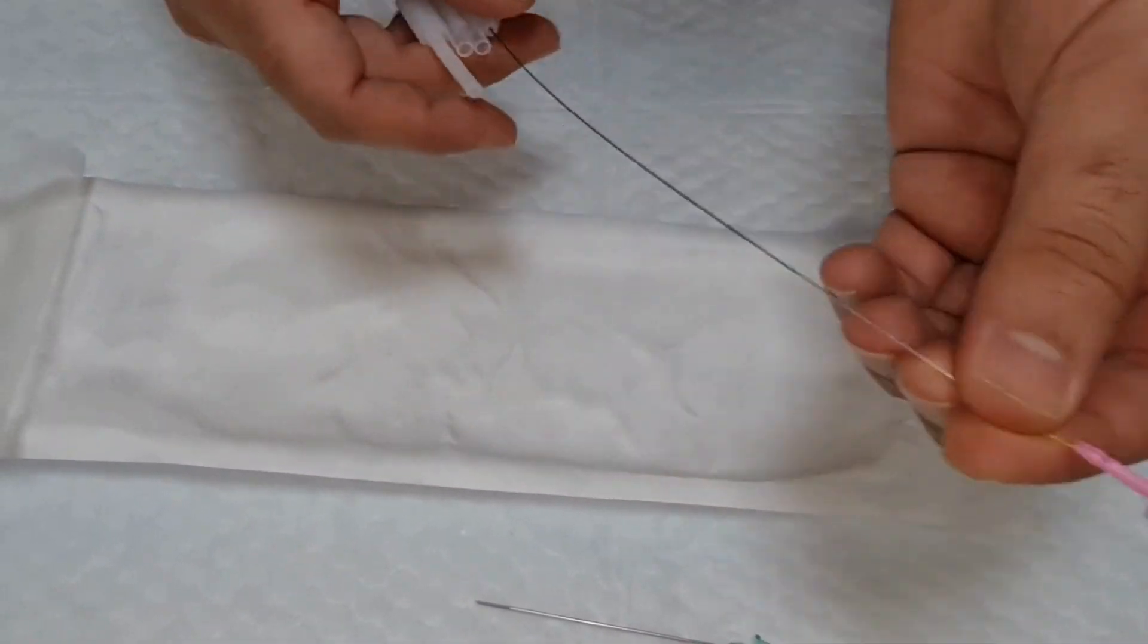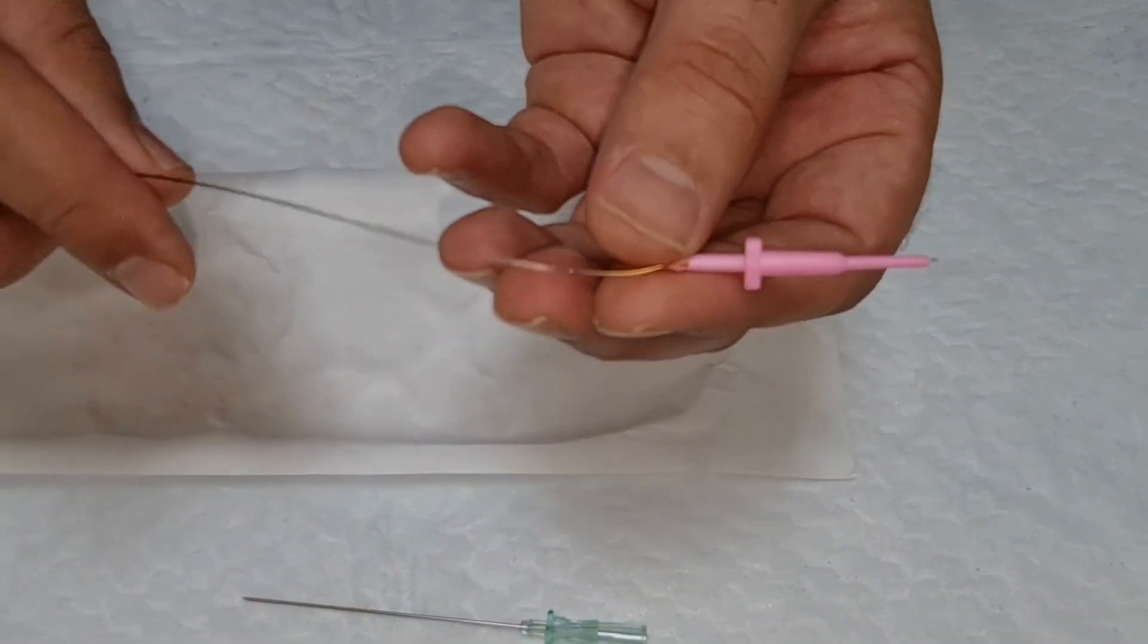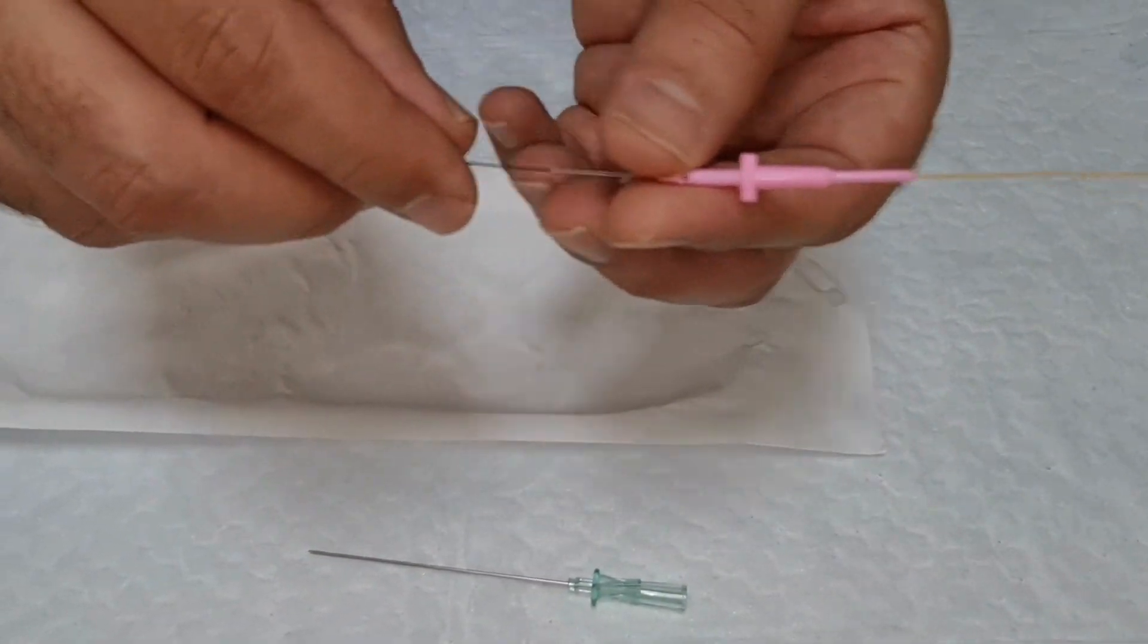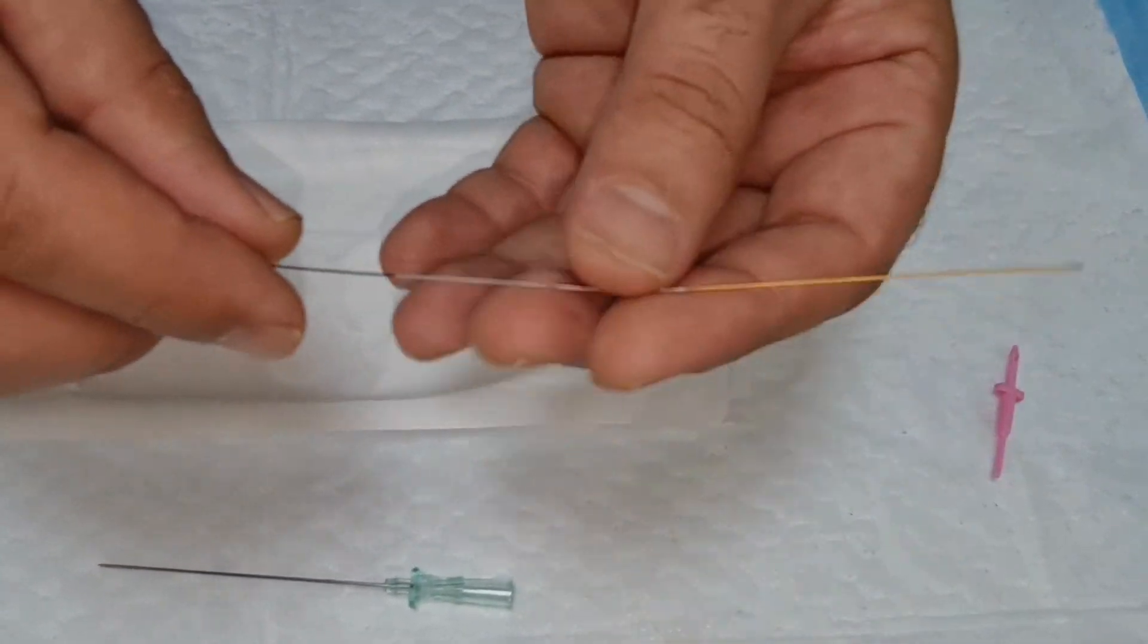And this is the mini guide wire, different than the sheet. See, this is a soft tip, very soft tip and straight.